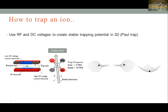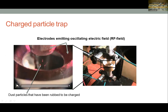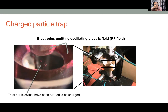In the Paul trap, RF electrodes create a rotating electric field, while DC fields confine ions in one direction. The combination of these electric field potentials traps charged particles in both axial and radial directions. We then apply lasers to cool these atoms down to the ground state. Another macroscopic demonstration shows that oscillating electric fields can trap charged dust particles that have been charged by rubbing — and you can see these vibrating dust particles trapped in the electric field.